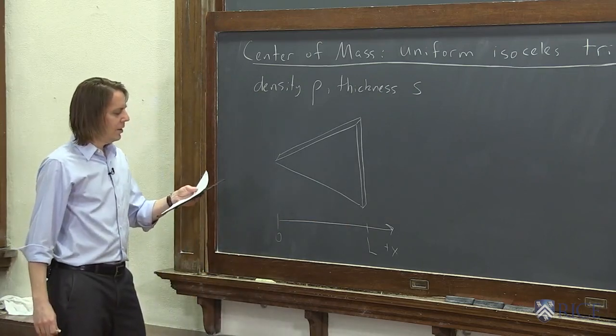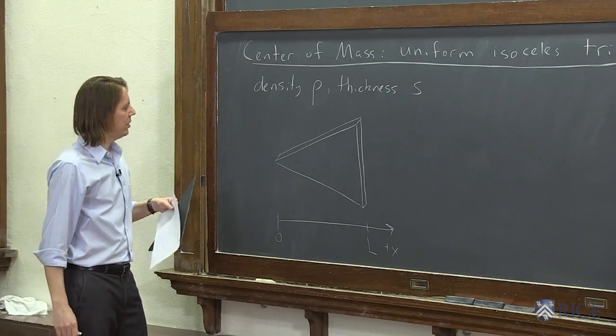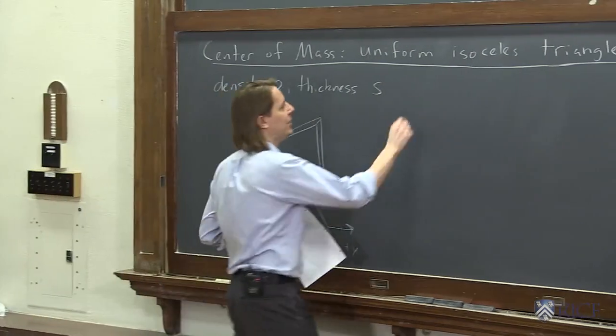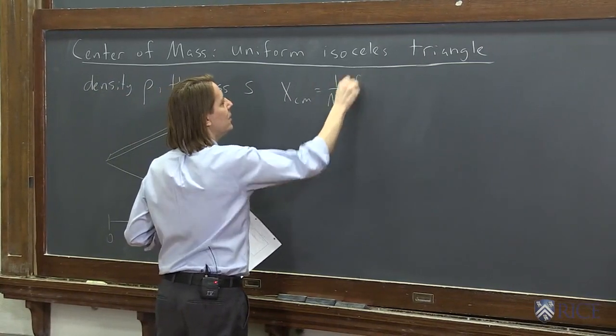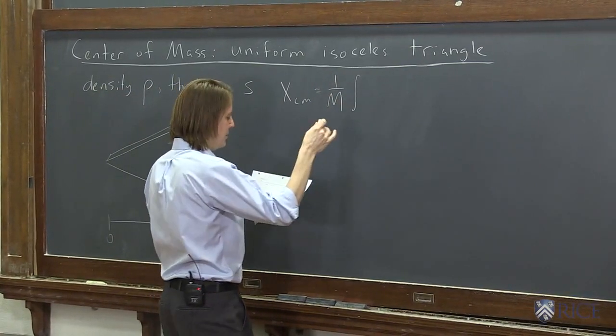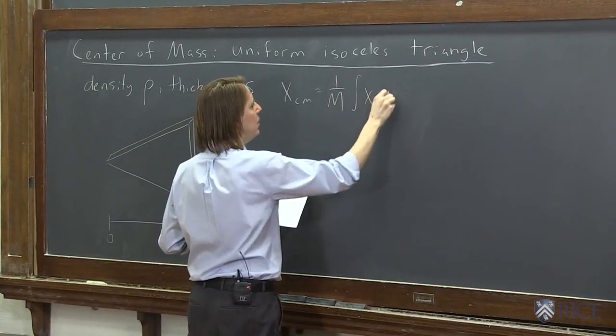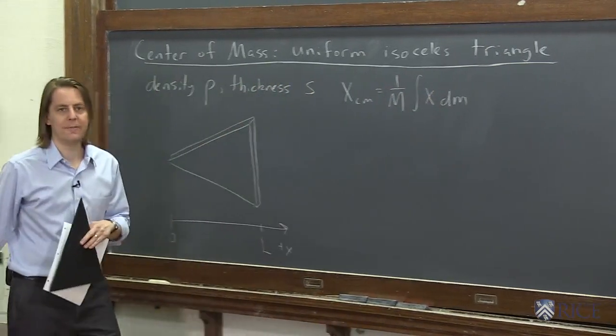And now, what's the center of mass in terms of the x-axis? So let's see. We go back to our definition of the center of mass. Xcm is 1 over the total mass times the integral of each position, xdm. We just got to fill all that out.